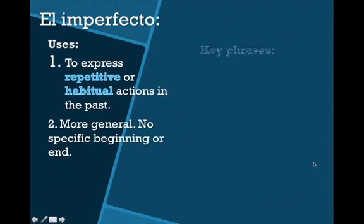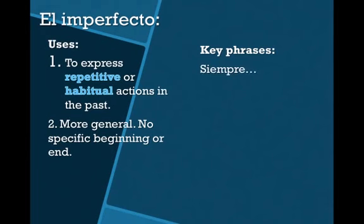Here are some key phrases to help you identify sentences in which you use the imperfecto. Siempre — always. Very general. We're not saying yesterday or last night. We're saying always — you always did something. That's very general. It's repetitive; it happened frequently. A menudo means every so often or frequently. Again, that's repetitive and habitual. It's not a specific point in time.